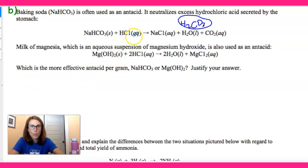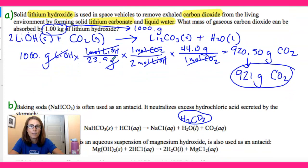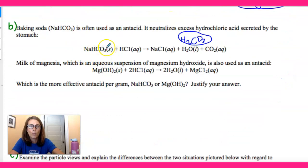When H bonds to the bicarbonate ion, you get H₂CO₃. Anytime you see H₂CO₃, know that it breaks down into H₂O and CO₂ — so those products further decompose. To determine which antacid is more effective per gram, we're going to do stoichiometry with both reactions, starting with one gram of each, to see which one neutralizes more HCl. It will be very similar to what we did in the first problem.